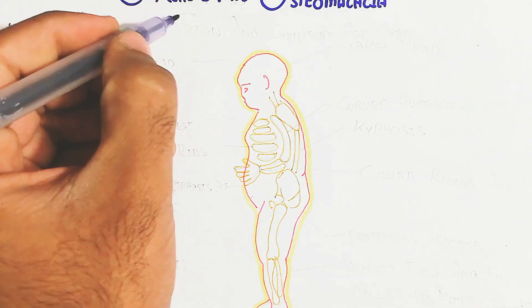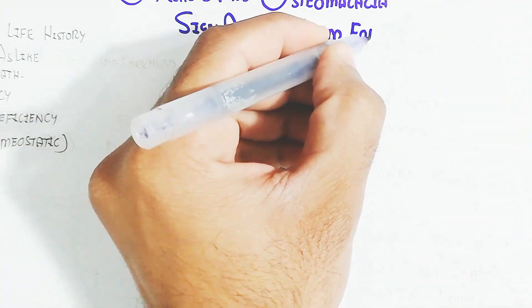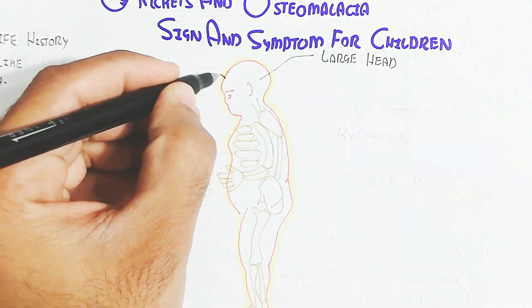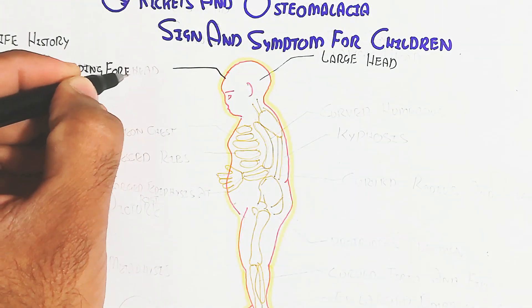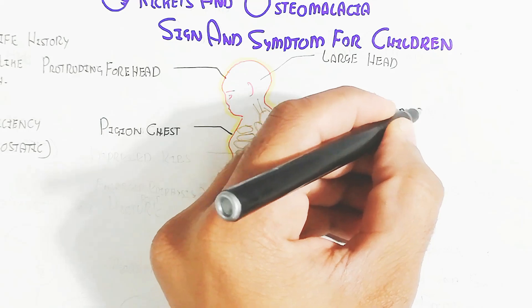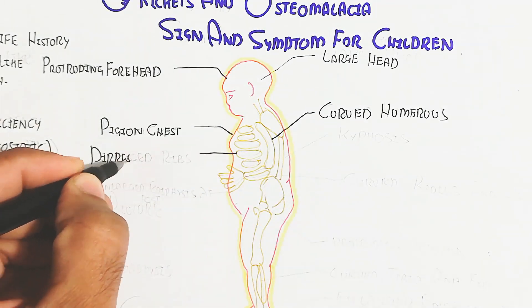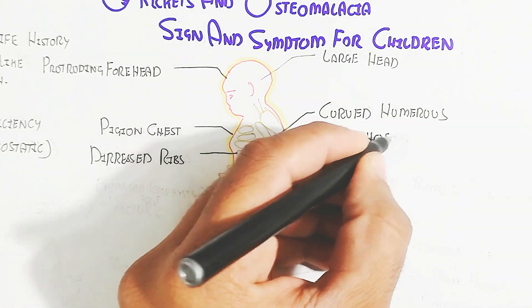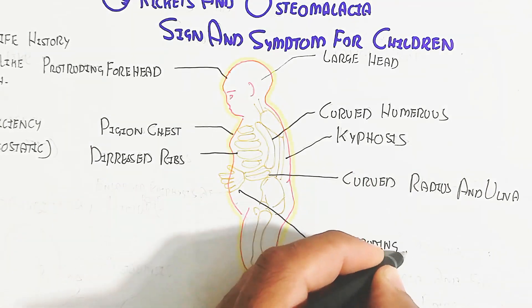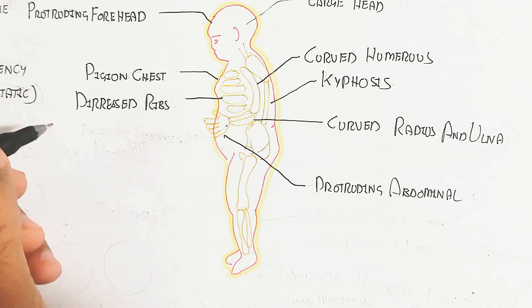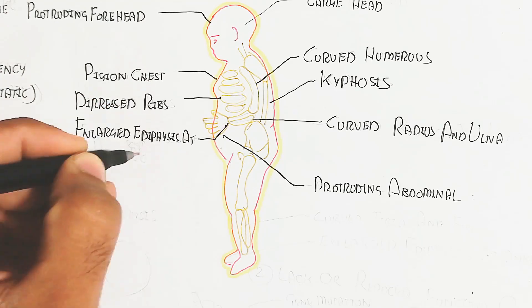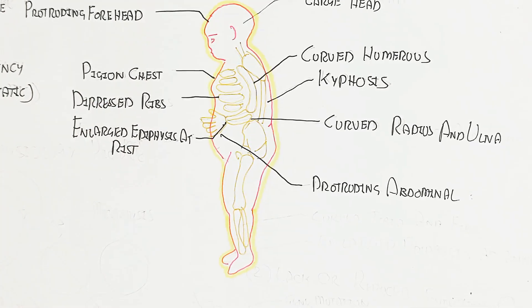This is a baby which is affected due to rickets and osteomalacia. So identification with the phenotypically large head and the protruding forehead and the pigeon chest, curved humerus, distressed ribs, curved radius and ulna, and the protruding abdomen. This is the enlarged epiphysis at wrist.